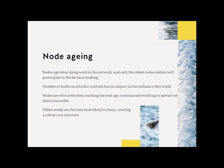Node aging means that we limit the influence that a node has according to the amount of work it has performed over time. This means that an attacker can't take control by setting up and providing extensive resources to the network. The number of nodes and resources doesn't matter if your nodes are young because, put simply, they have very little say in the decision making. As nodes age, they are also relocated, which also helps to prevent any kind of local concentration of malicious nodes.